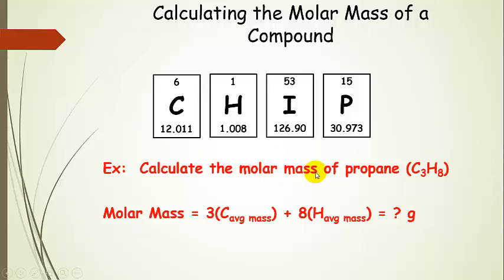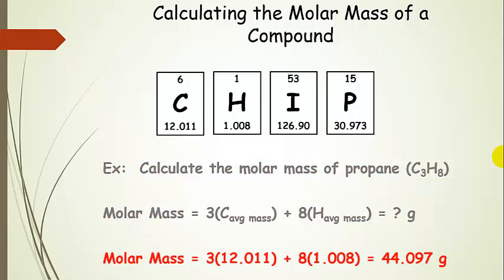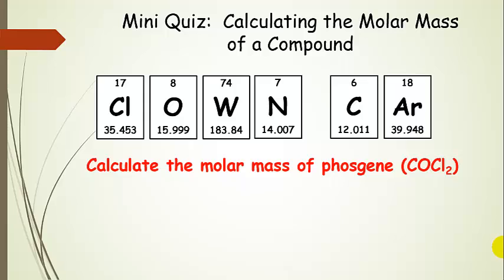Let's calculate the molar mass of propane. Here's our formula for propane — we can see we have 3 carbons and 8 hydrogens. If we have a whole mole of this stuff, we have 3 moles of carbon and 8 moles of hydrogen. So the molar mass is going to be 3 times the average mass of carbon, plus 8 times the average mass of hydrogen. Plugging in: 3 times 12.011, plus 8 times 1.008 — we get 44.097 grams per mole.